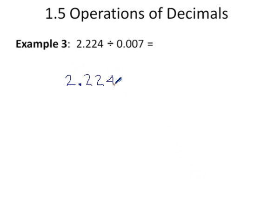2.224 divided by 0.007. Think about it for a second. What do we have to do with the decimals? Is this decimal okay?